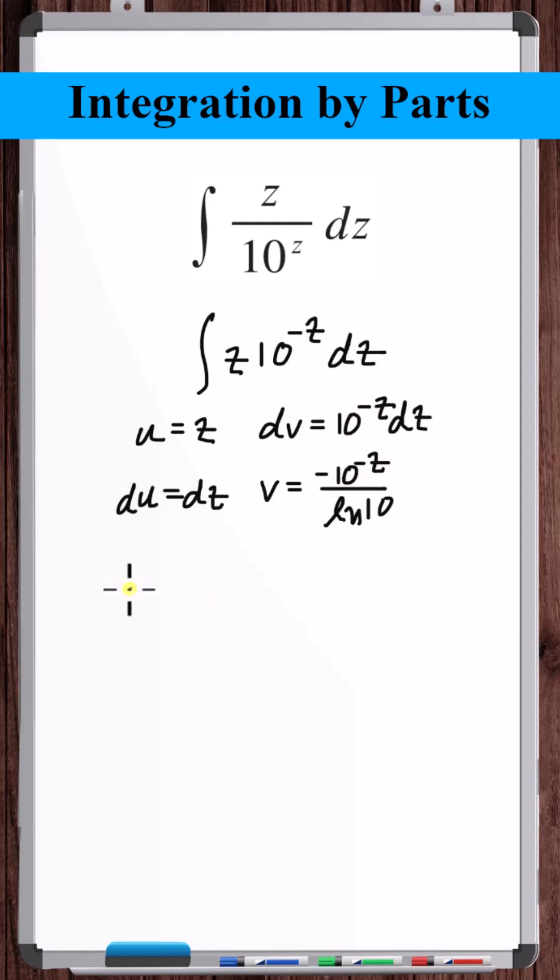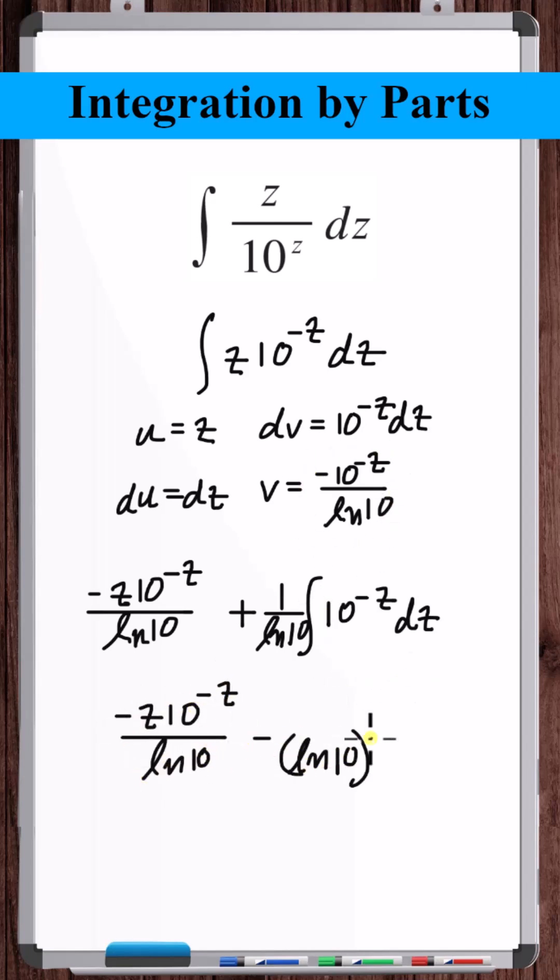So now applying the formula for integration by parts, we've got u times v minus the integral of v du. Let's bring out the minus and bring out the one over natural log of 10. And so the integral is minus 10 to the minus z over natural log of 10. And that's the integral.